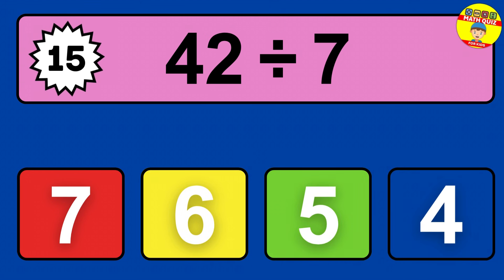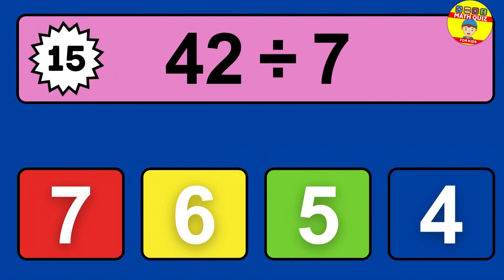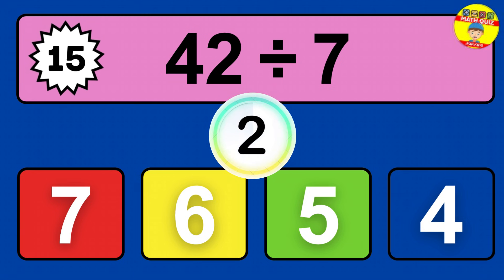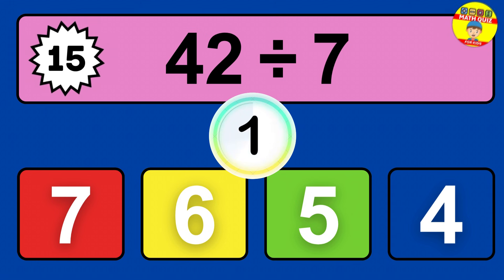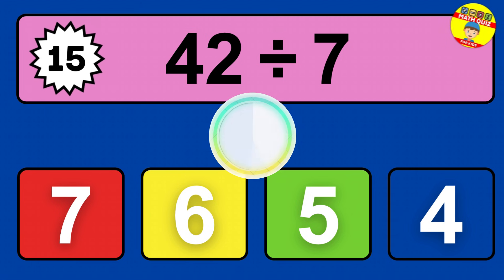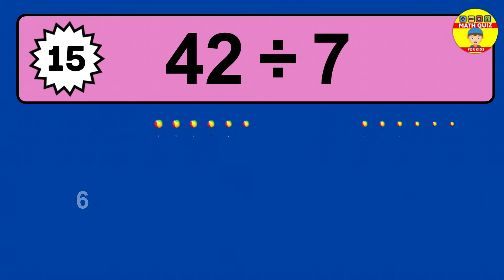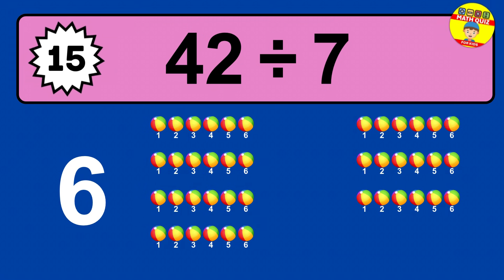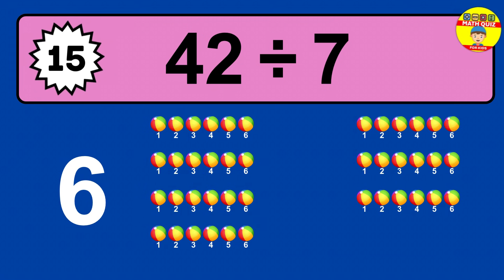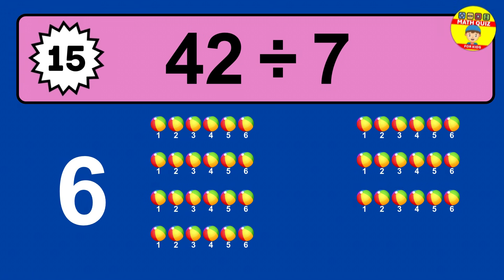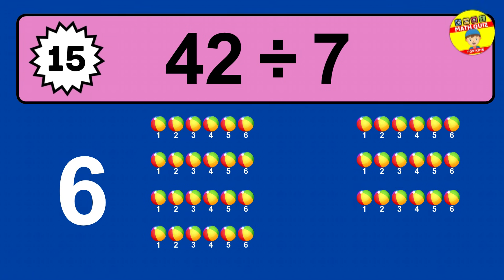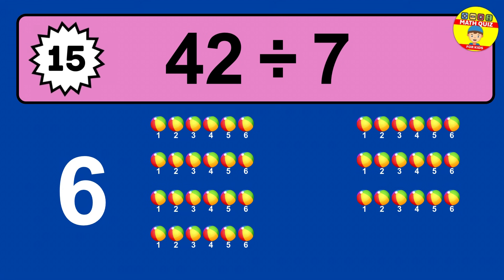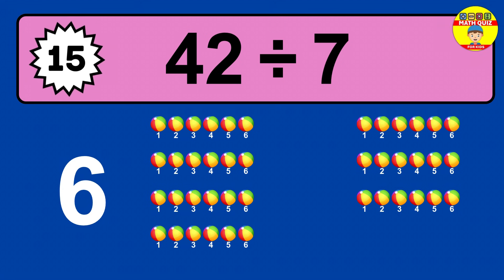42 divided by 7 — time to think. Let's go to the solution. Divide the number 42 by 7. Each group contains 7 units, so dividing 42 by 7 results in 6 equal groups. Thus, the result is 42 divided by 7 equals 6.